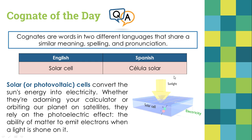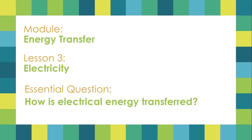These cells receive sunlight. With the chemicals inside, they convert solar energy into electricity, meaning the electrons on the cell are released, and then we can store it as we want — we can store it in a battery, or connect it right away to a circuit that turns on when sunlight hits. We continue on our energy transfer module, specifically on lesson three, which we're finishing today.